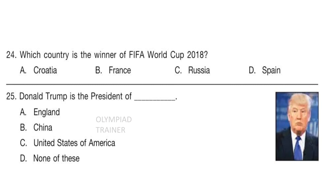Question 24: Which country is the winner of FIFA World Cup 2018? Answer is option B — France. Question 25: Donald Trump is the president of... Option C — United States of America is the answer.